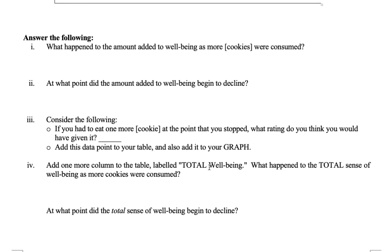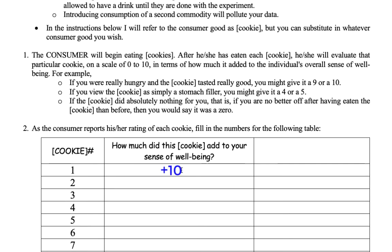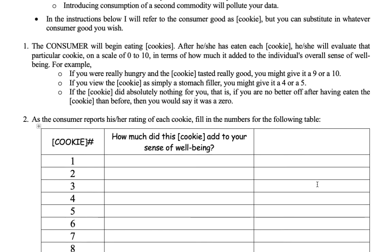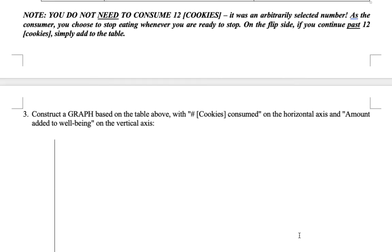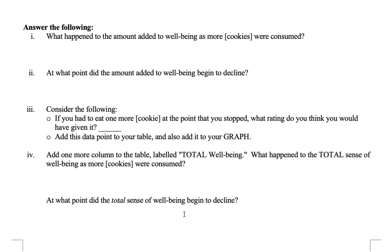Number four says: add one more column to the table labeled total well-being. If item one gave you 10 units and item two gave you 8, your total well-being would be 10 after the first and 18 after the second. You're just taking a running total in the third column and watching what happens to those numbers. Does that total well-being column ever drop? If you don't see it drop, when do you think it would have dropped?